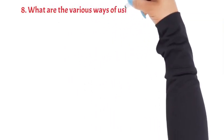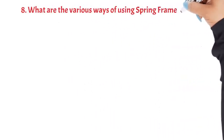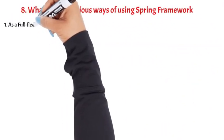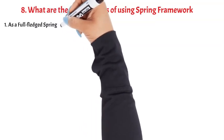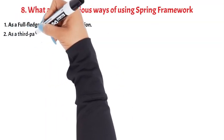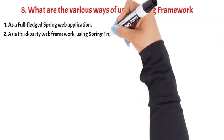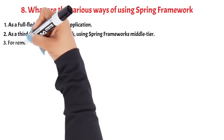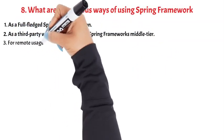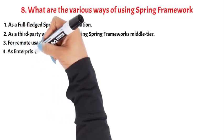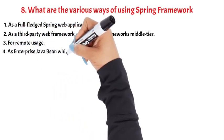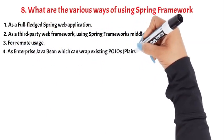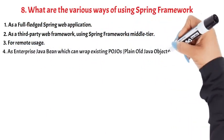Question 8: What are the various ways of using Spring Framework? 1. As a full-fledged Spring web application. 2. As a third-party web framework, using Spring Framework's middle tier. 3. For remote usage. 4. As enterprise JavaBean, which can wrap existing POJOs (plain old Java objects).